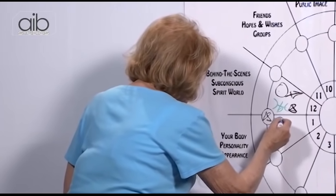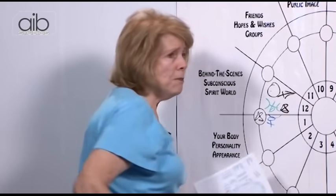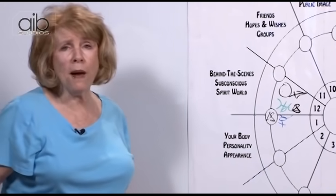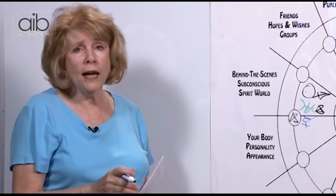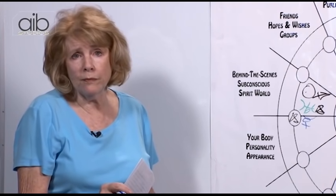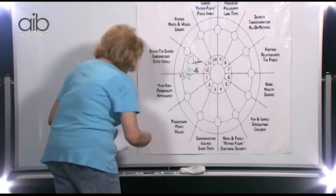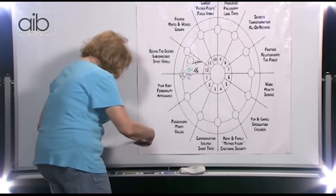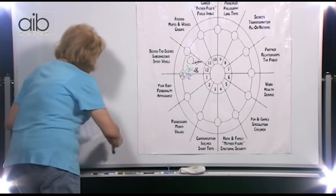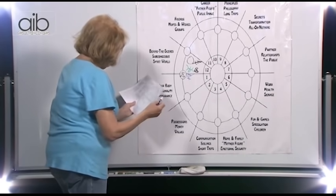She has Mercury in her first house. Mercury is what we think about and talk about, and so she thinks about herself and she talks about herself. And there's nothing wrong with that. It just is. So this is the lifetime in which she wanted to put more attention on herself as far as thinking and talking and all of that good stuff.